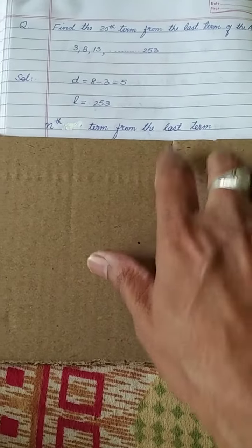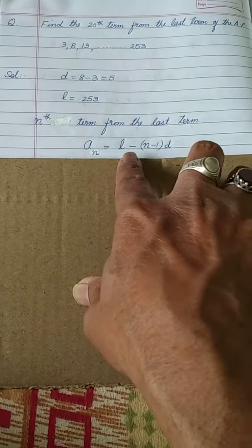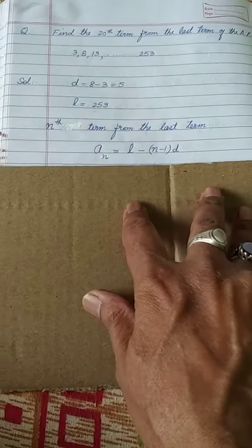Nth term from the last term, how to calculate? Formula is this one: AN is equal to L minus N minus 1 into D. This formula we will have to use.